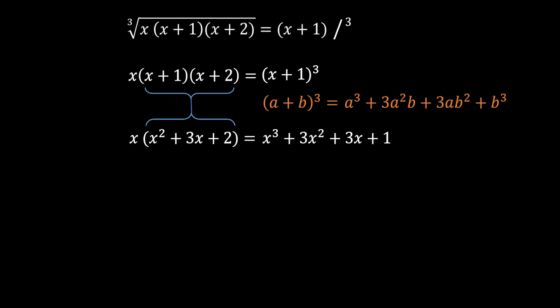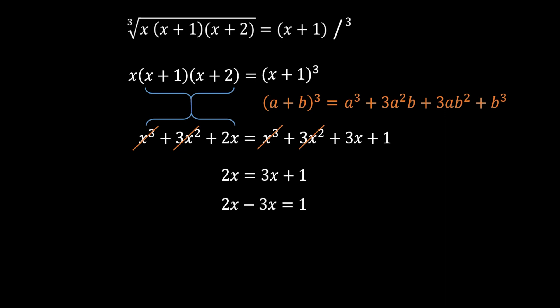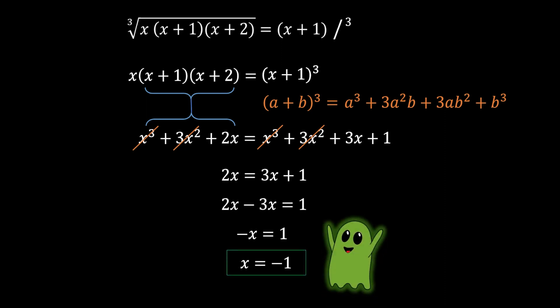Multiplying everything on the left side by x gives x³ + 3x² + 2x. We cancel x³ from both sides, and also 3x² from both sides, leaving 2x equals 3x + 1. Moving 3x to the left gives minus x equals 1, so x equals minus 1. That is our solution! I hope you enjoyed this video — if you did, please give it a like. You can also share or subscribe. Until next time, take care!